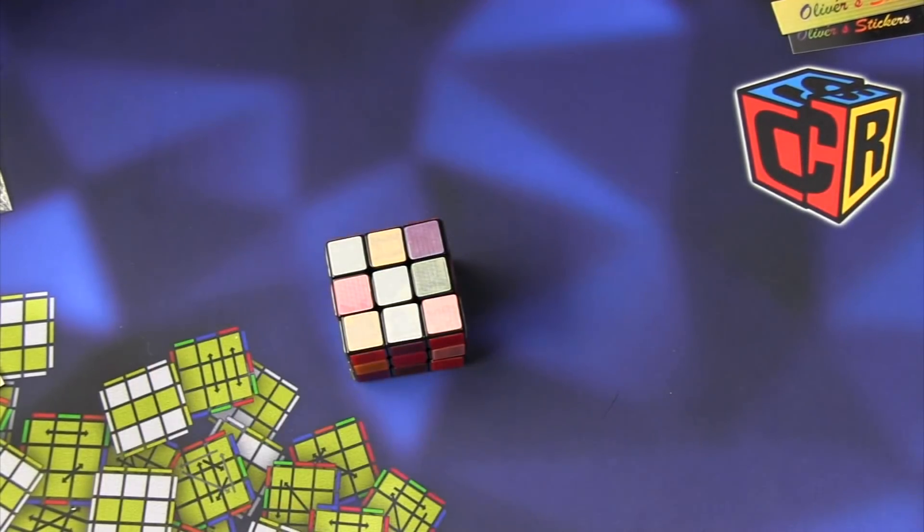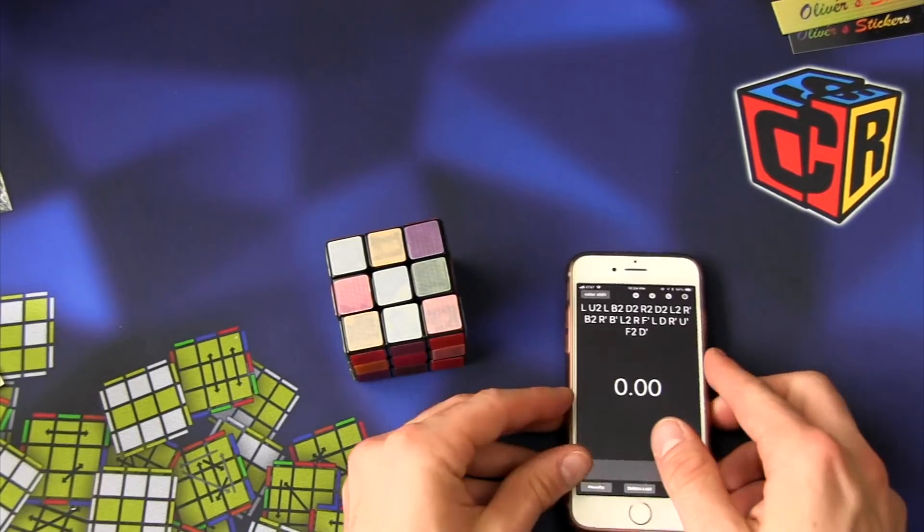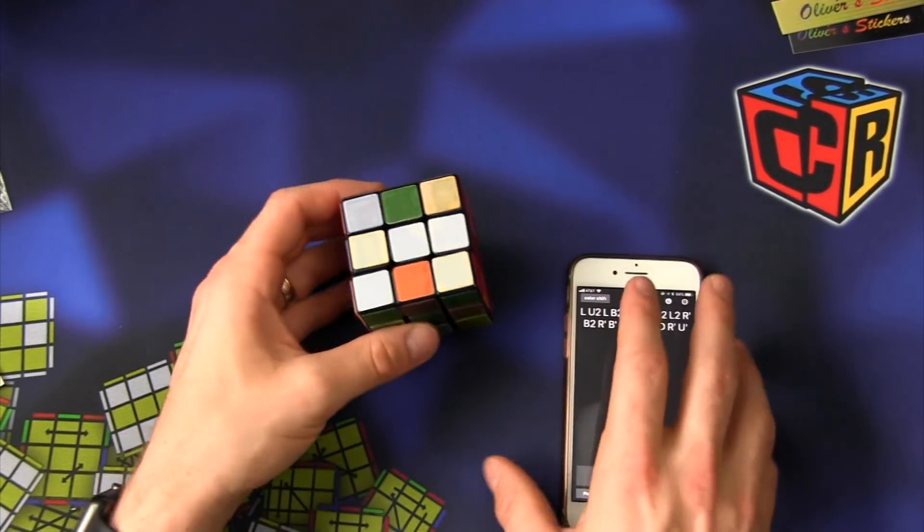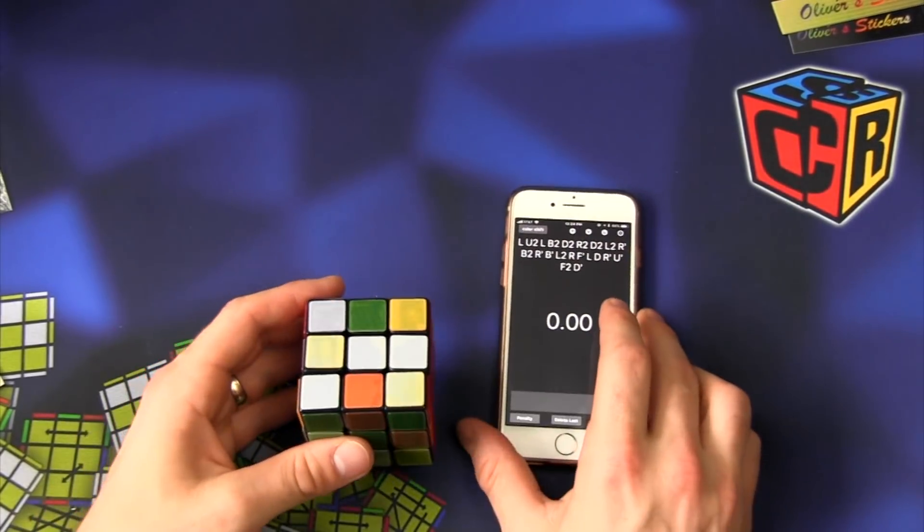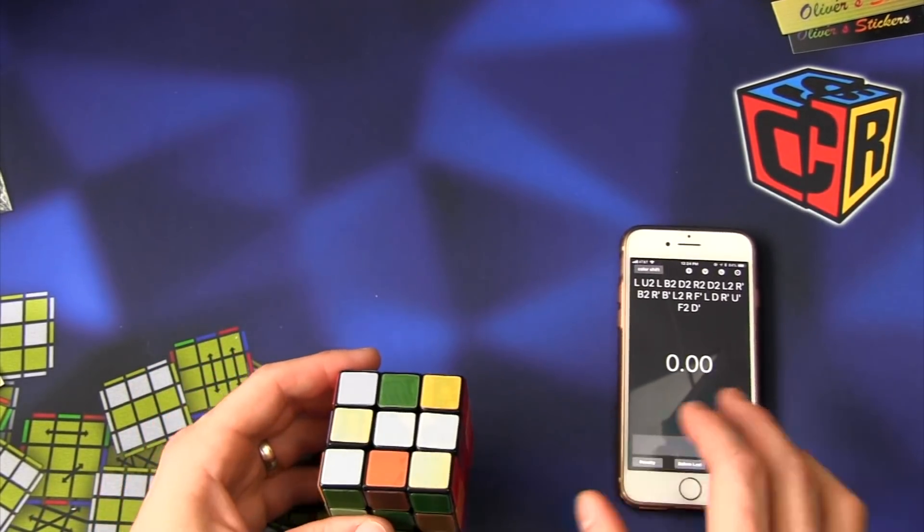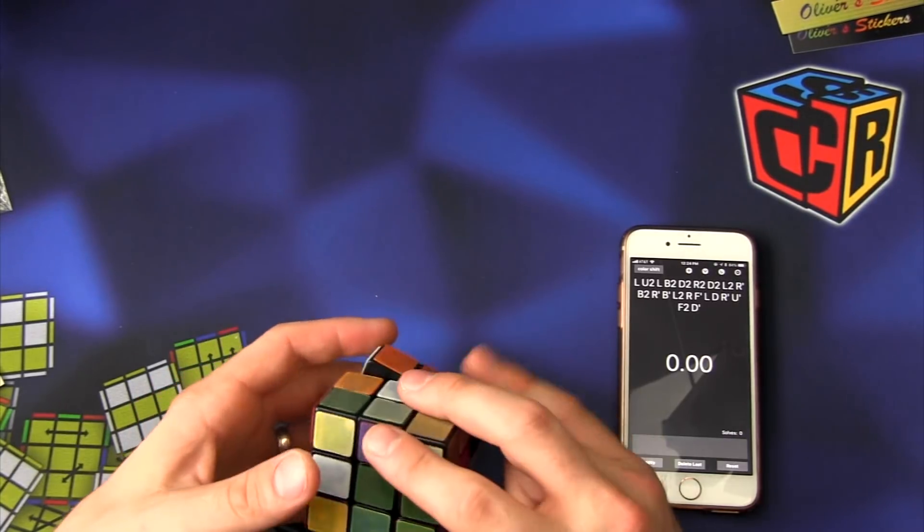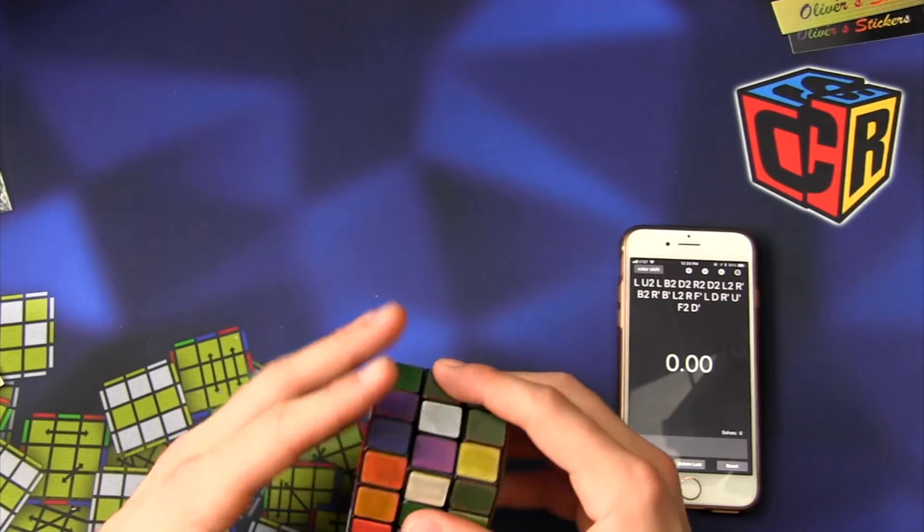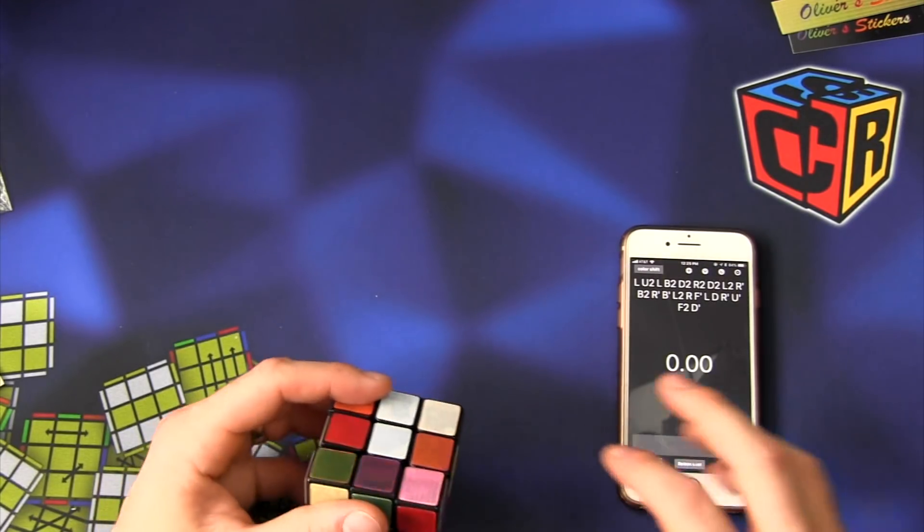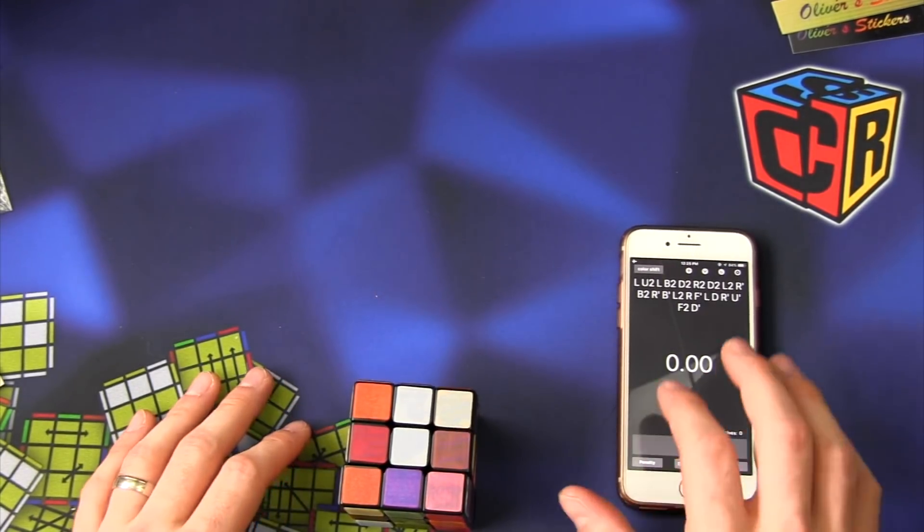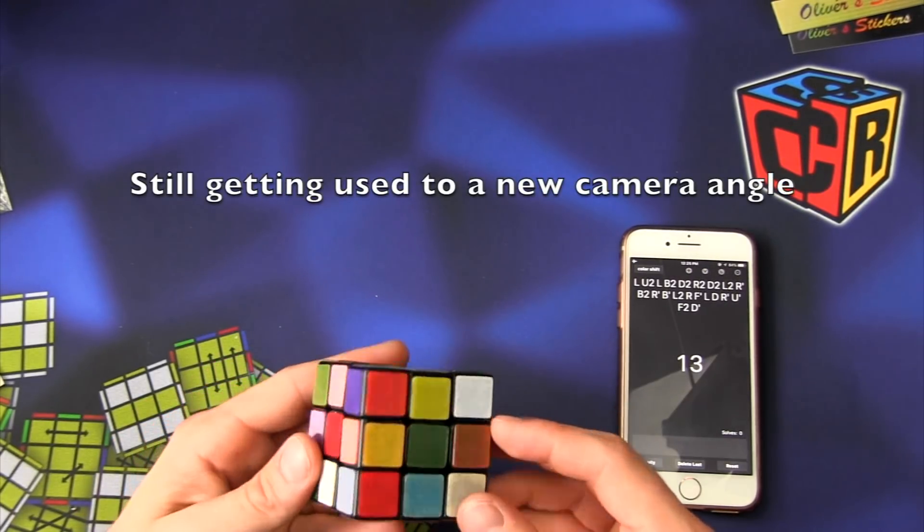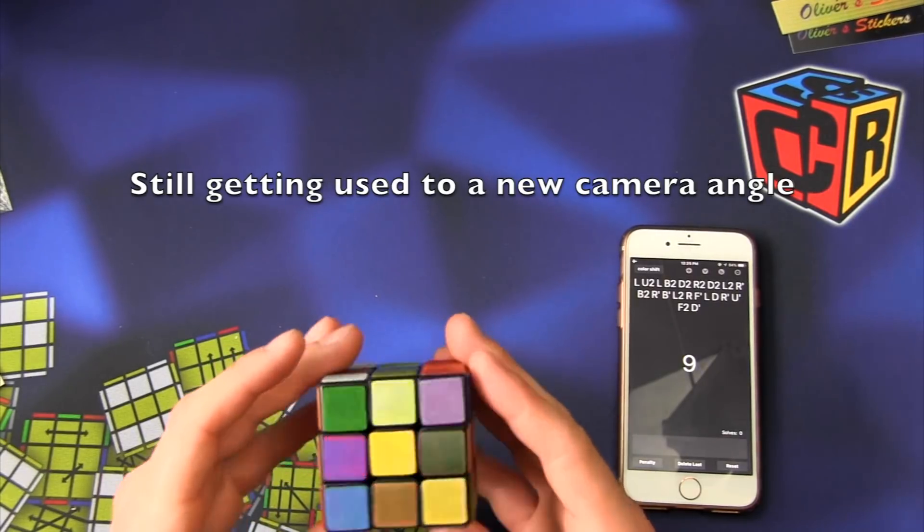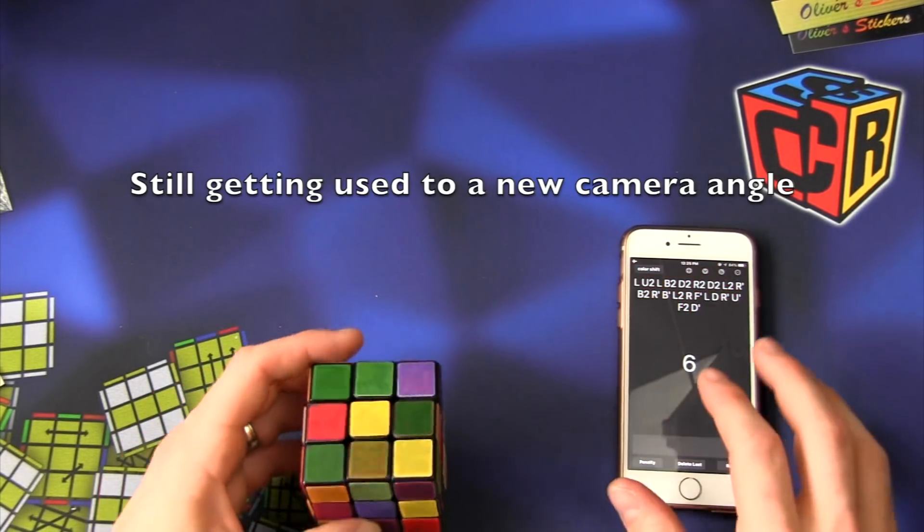But let's do a few solves. Let's do an average of five. Okay. Where's green? Oh, this is going to be really bad. So scramble us up. Okay.